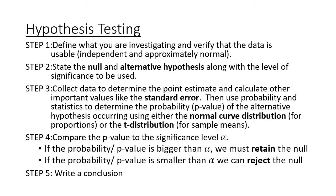Hypothesis testing can typically be broken down into five steps. The first step is to clearly define what you're investigating and verify that your data is usable — meaning your data has to be independent and approximately normal. Step two, you need to state your null and alternative hypotheses, along with the level of significance. Step three, we collect our data, determine our point estimate, and calculate the standard error.